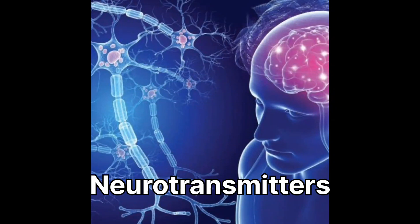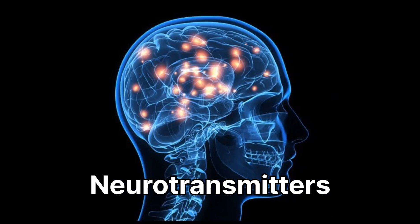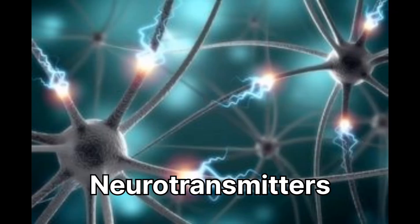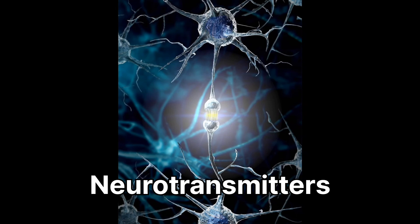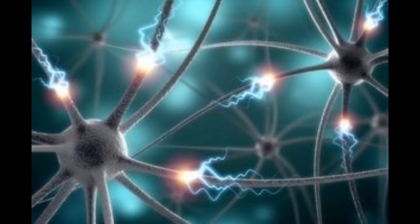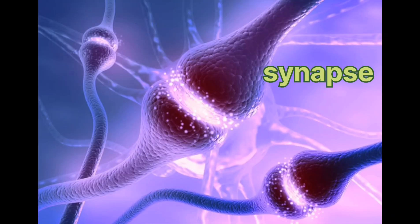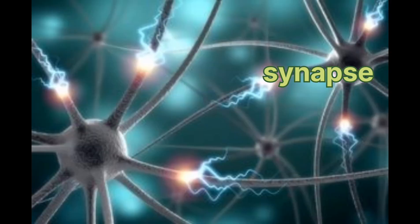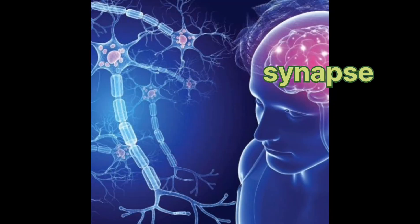Today we will talk about neurotransmitters, their function, and the types of neurotransmitters. Neurotransmitters are chemicals that transmit signals across the synapse, which is a gap between neurons — or nerve cells — or between a neuron and a target cell.